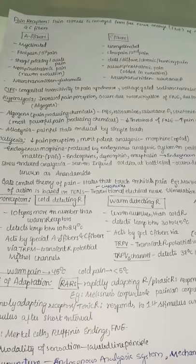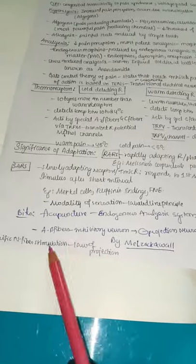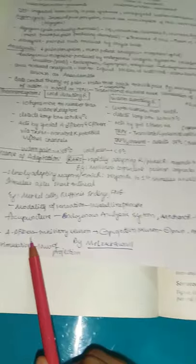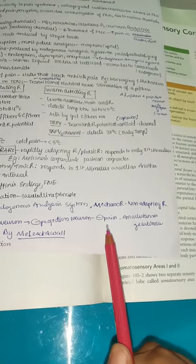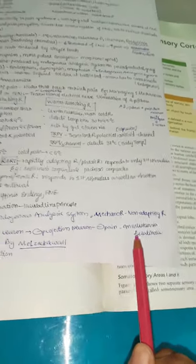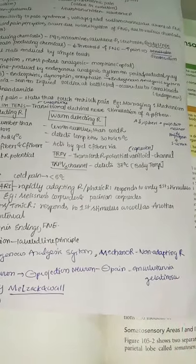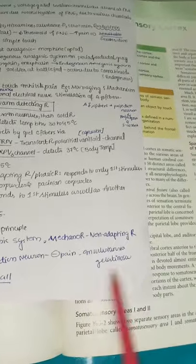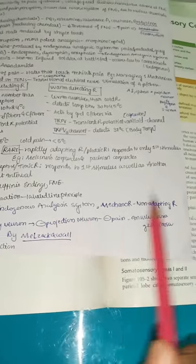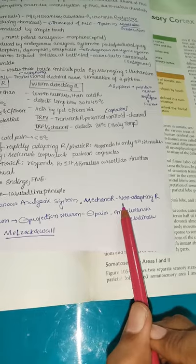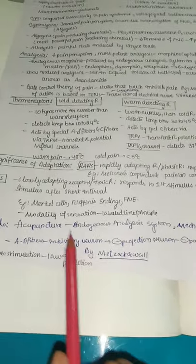In the gate control theory, A-beta fibers inhibit the projection neuron in the substantia gelatinosa of the dorsal horn, thereby inhibiting pain transmission.